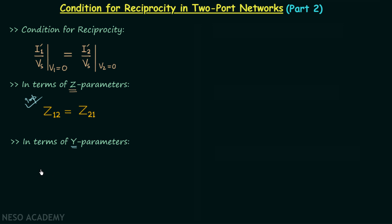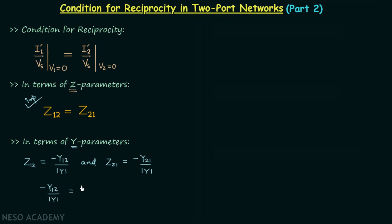We have converted Y parameters to Z parameters and therefore we know that Z12 = -Y12 / det(Y) and Z21 = -Y21 / det(Y). From these expressions, setting Z12 = Z21, we get -Y12 / det(Y) = -Y21 / det(Y), so finally Y12 = Y21. This is the condition for reciprocity in terms of Y parameters.